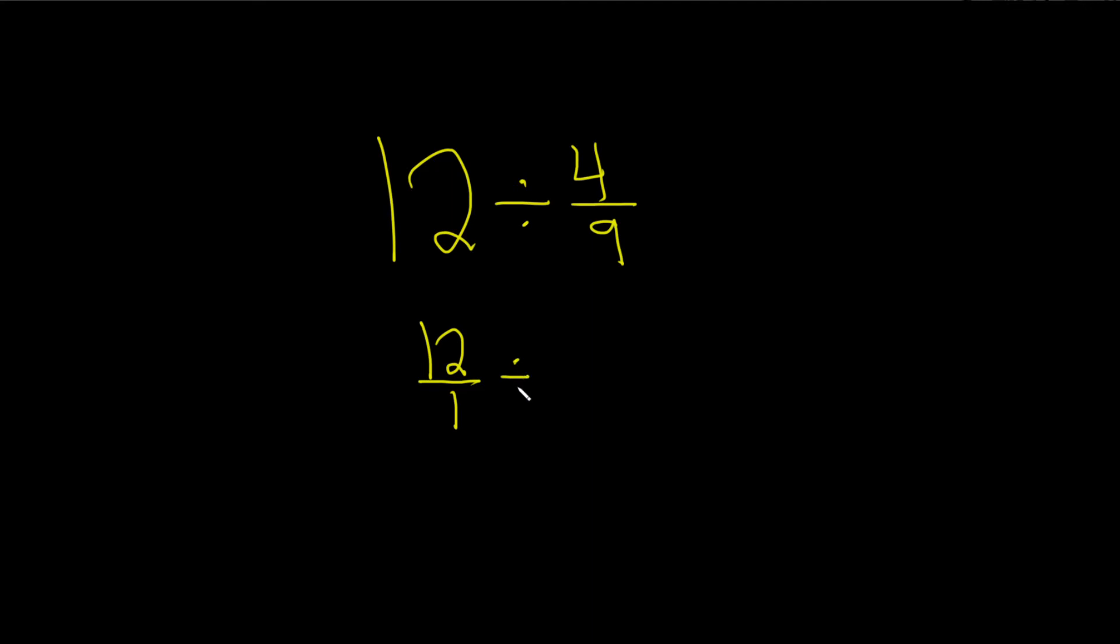And then we still have this piece here, divided by 4 over 9. Now we're going to use the definition of division. Whenever we divide, we really multiply by the reciprocal.